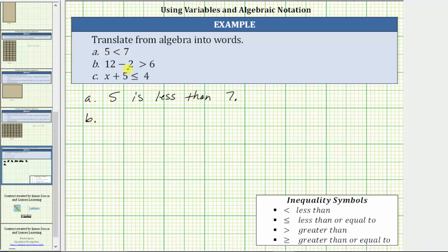For B, we can express this difference several ways. We can say 12 minus two is greater than six. We can say 12 decreased by two is greater than six, as well as two less than 12 is greater than six, or even the difference of 12 and two is greater than six. Let's just write this as 12 minus two is greater than six.